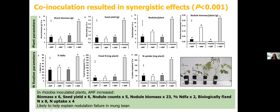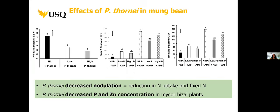This synergistic impact suggests that mycorrhizal fungi could help explain the nodulation failure problem we've been seeing in mungbean. However, in the first set of experiments, Pradylenchus thornei actually reduced nodule numbers in the plant at six weeks, which slightly reduced the amount of fixed nitrogen and nitrogen uptake at 12 weeks. We also found that Pradylenchus thornei decreased the concentration of phosphorus and zinc in the shoots of plants inoculated with both AMF and rhizobia.